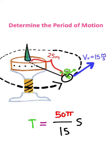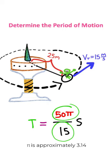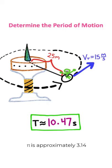Now what I need to do is take 50 times π and divide it by 15. You're going to get 10.47 approximately seconds. So notice that the period of motion is a unit of time since we got seconds.